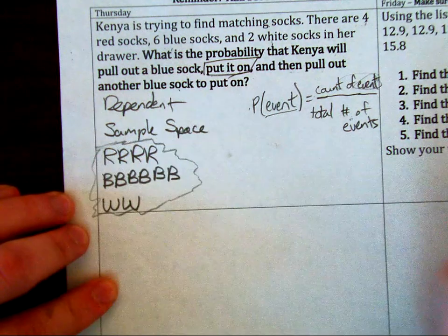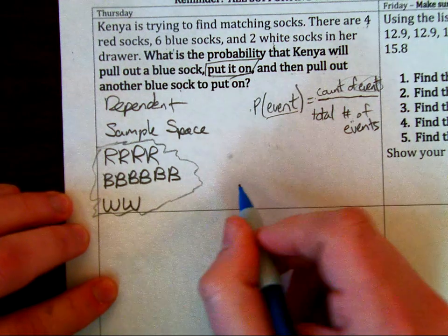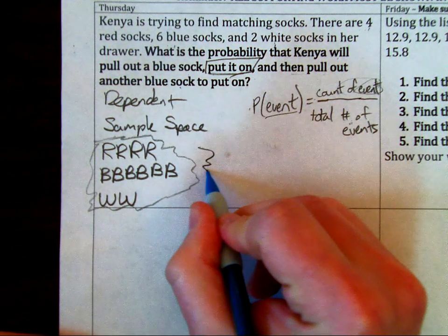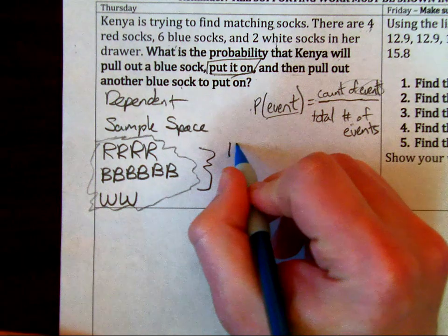That kind of shows our little sample space. You can think of this as a pile of laundry or maybe a drawer of socks, whatever it might be. So in total, a total of 10 socks.